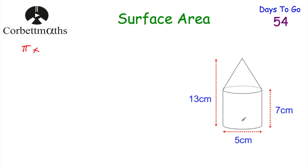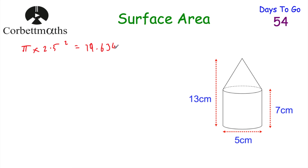Let's start with the area of the circle on the bottom. We do pi multiplied by the radius, which is 2.5, squared. So pi multiplied by 2.5 squared equals 25 over 4 pi, or 19.63495 centimetres squared. That's the area of the base of the shape.